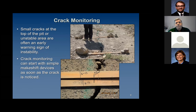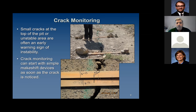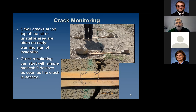Crack monitoring. As a slope begins to become unstable, cracks up on the crest will typically show up as the first thing. So monitoring these small cracks will give you an idea of what's going on — is the crack continuing to open, or is it static? What changes are being made to the ground? It could be as simple as laying two sticks across the crack, as you can see here. These methods are used at some of the smaller mines and they're very effective before you bring out the big equipment.